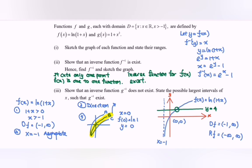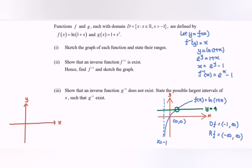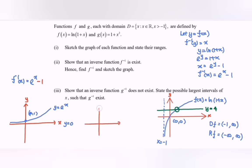To sketch f inverse: first consider y equals e to the power x, which has asymptote y equals 0 and passes through (0, 1). Since f inverse of x equals e to the power x minus 1, we shift the graph down 1 unit. The horizontal asymptote becomes y equals negative 1, and the point (0, 1) drops to (0, 0). So the graph of f inverse of x equals e to the power x minus 1 is sketched accordingly.